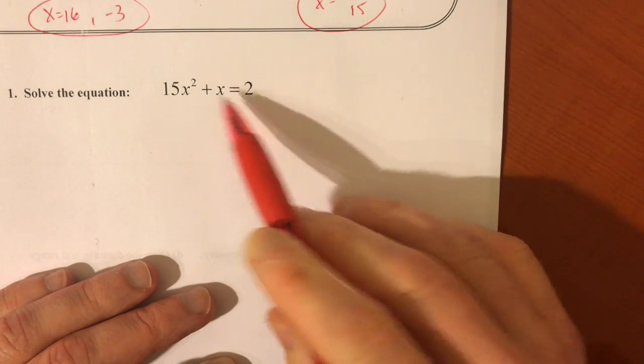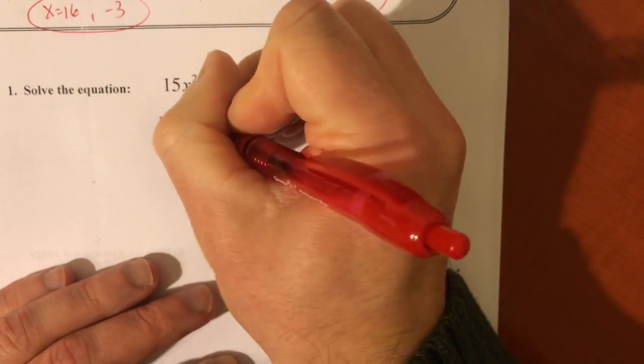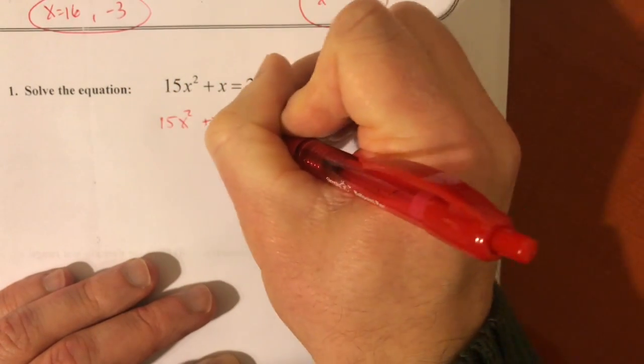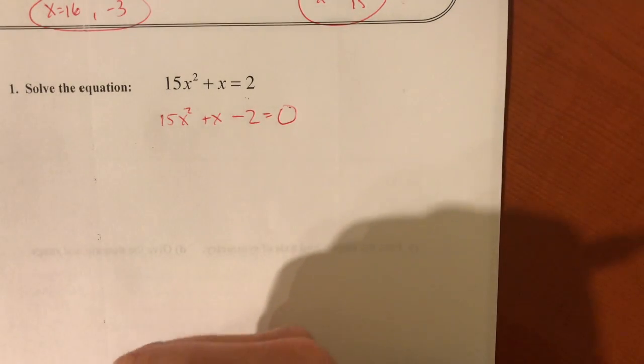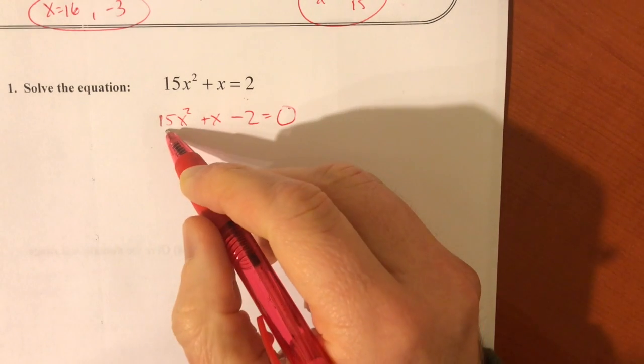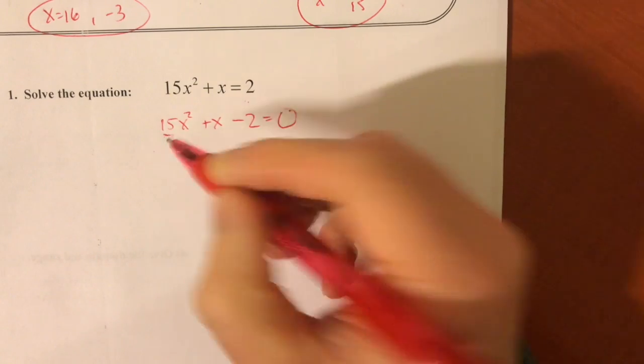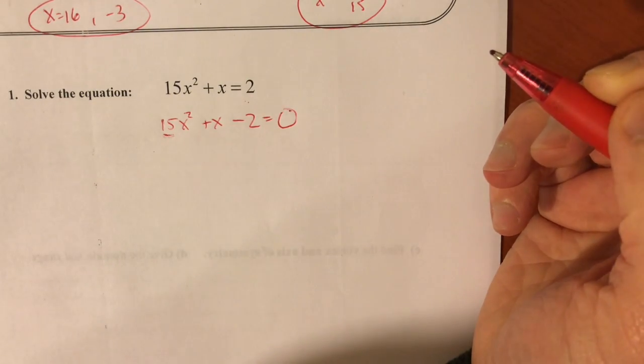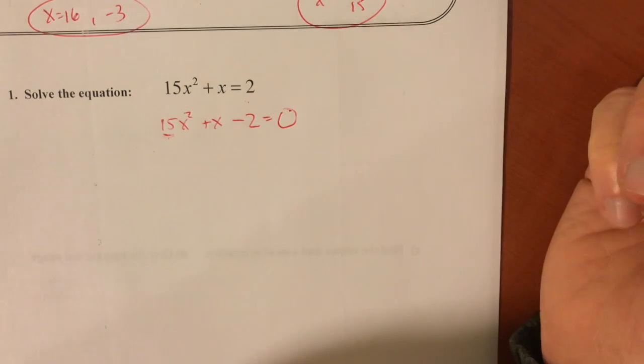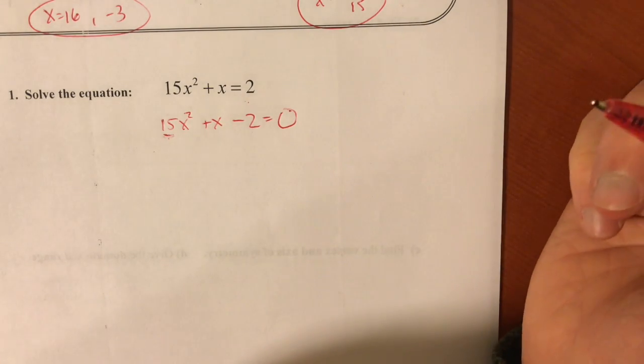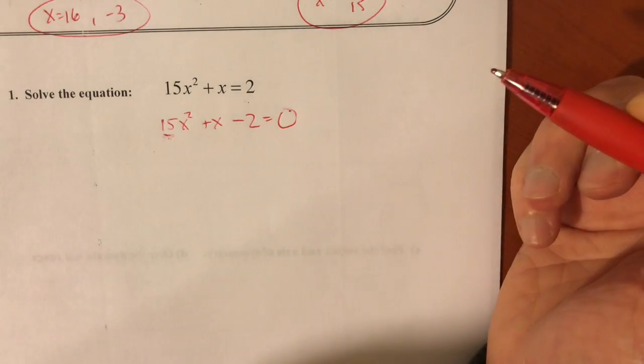So this is a quadratic. It's not equal to 0. So step 1, I'm going to bring that over. So subtract 2 from each side, and now you've got that. And now we're going to try to factor this. Again, this is what we've been working on the last couple days. Hopefully you're feeling a little bit better with it. If there's something out in front other than 1, you want to first try to take out a greatest common factor. And there's nothing there that I can take out other than 1.